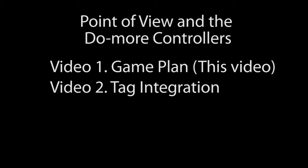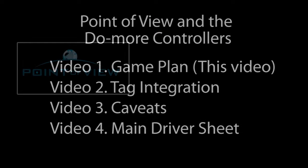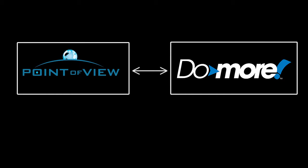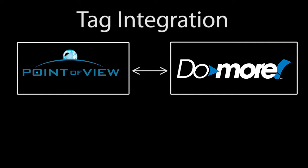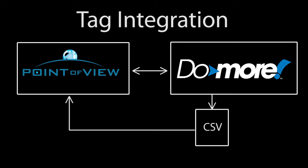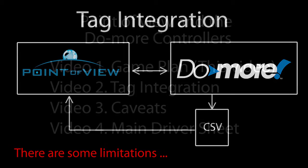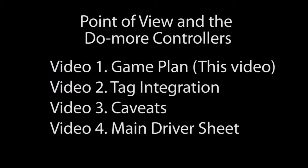In these videos we'll use two different methods to connect Point of View to the Do More controllers. The easiest way is to use tag integration, where you just export the tags from the Do More Designer software into a CSV file and then tell Point of View where to find that file. While that is quick and easy, it does have some limitations and there are some important caveats you need to be aware of when using tag integration, so we put those in a separate video just to make sure they don't get glossed over.